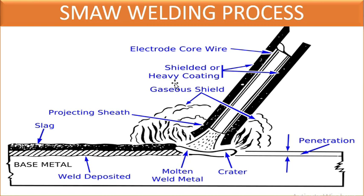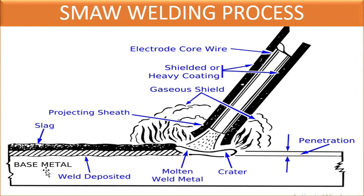The SMAW welding process uses an electrode with a core wire and heavy flux coating. The flux generates shielding gases and slag during welding. The process produces penetration into the base metal, a crater, and deposited weld metal protected by slag.